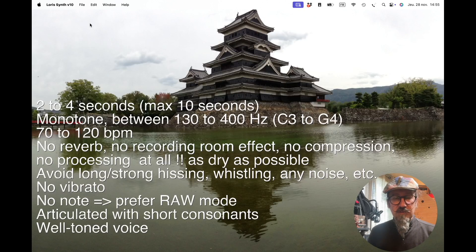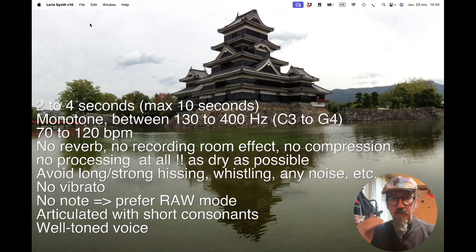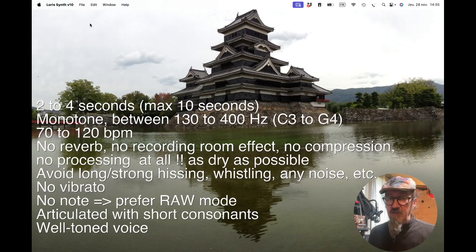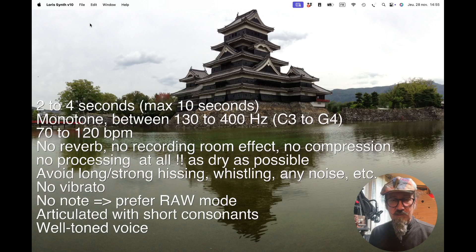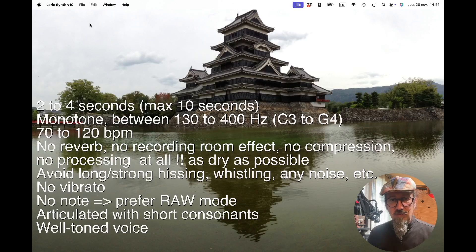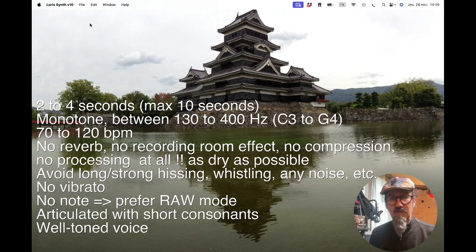If possible, the sample should be monotone — on one single note, with no note change. If there are some note changes, that's still okay; it will track the changes. And within the Egan matrix, you have ways to correct and make it monotone, which is useful.